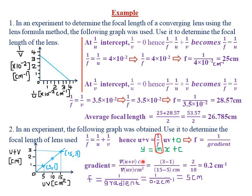Change in (u + v) is 3 − 1 = 2 centimeters. Change in uv is 15 − 5 = 10 centimeter squared. So the gradient is 2/10 = 0.2, and since centimeters cancels centimeter squared, we are left with per centimeter. The gradient equals 0.2 per centimeter.